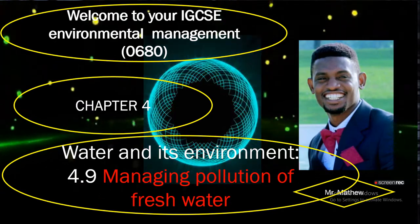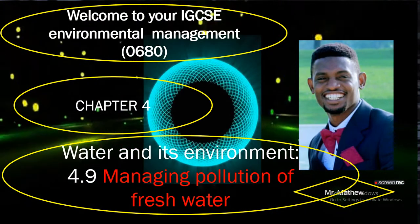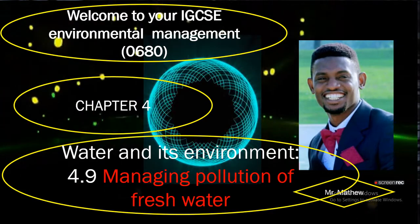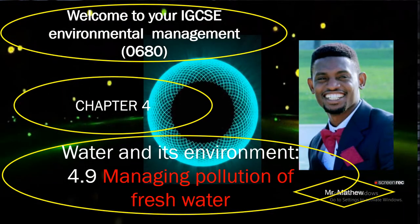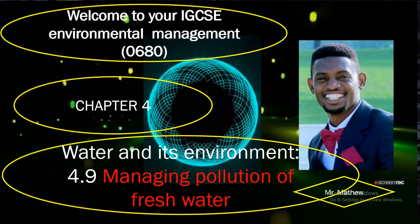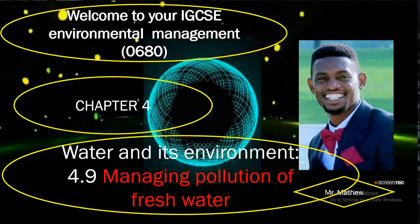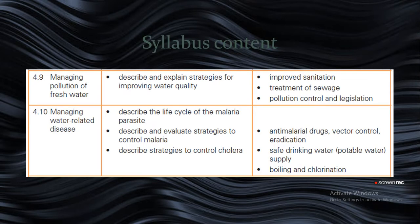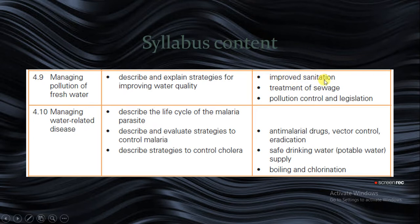We're still on Chapter 4, IGCSE Environmental Management. In this section we'll be looking at Syllabus Content 4.9, where we'll be looking at managing water — managing pollution of fresh water. The major syllabus content requires us to describe and explain strategies for improving water quality, including how to improve sanitation, treatment of sewage, and pollution control and legislation, all of which help in managing pollution of fresh water.